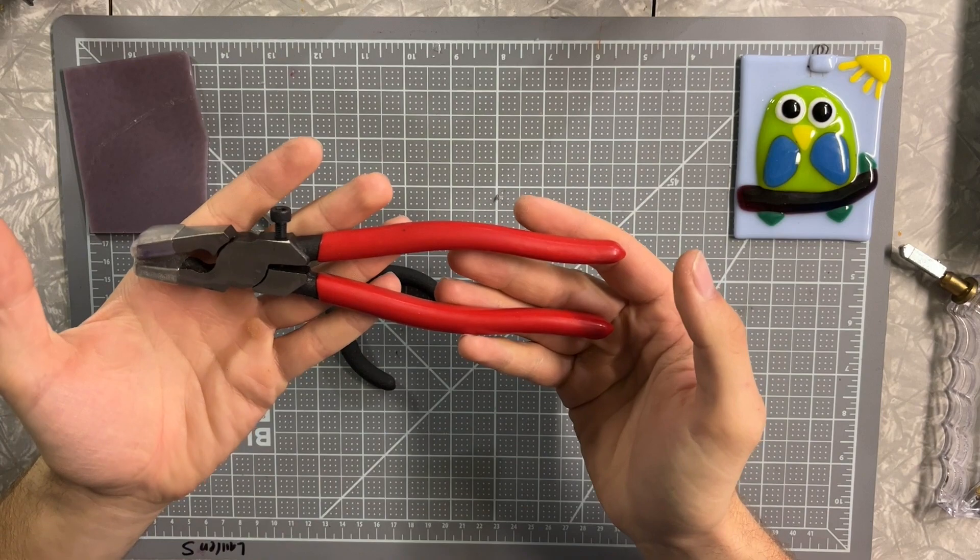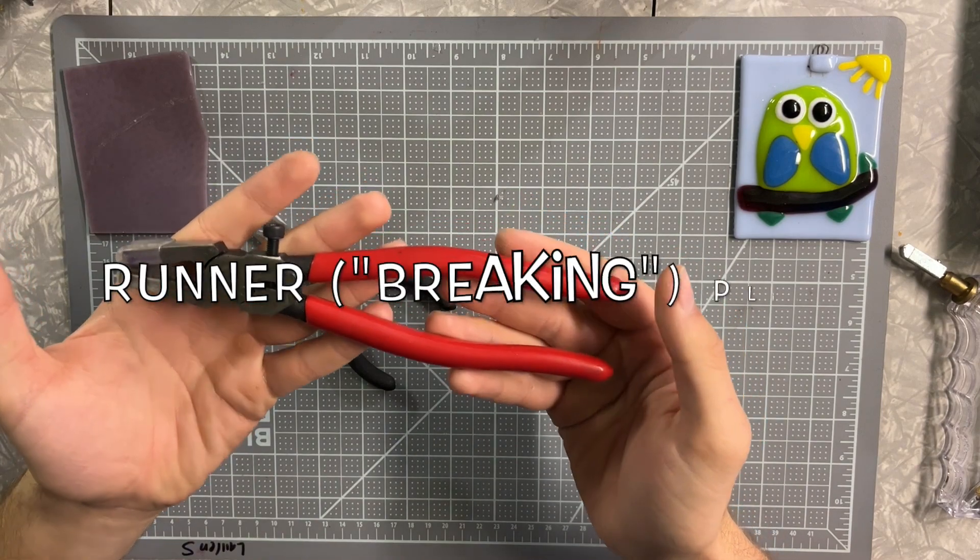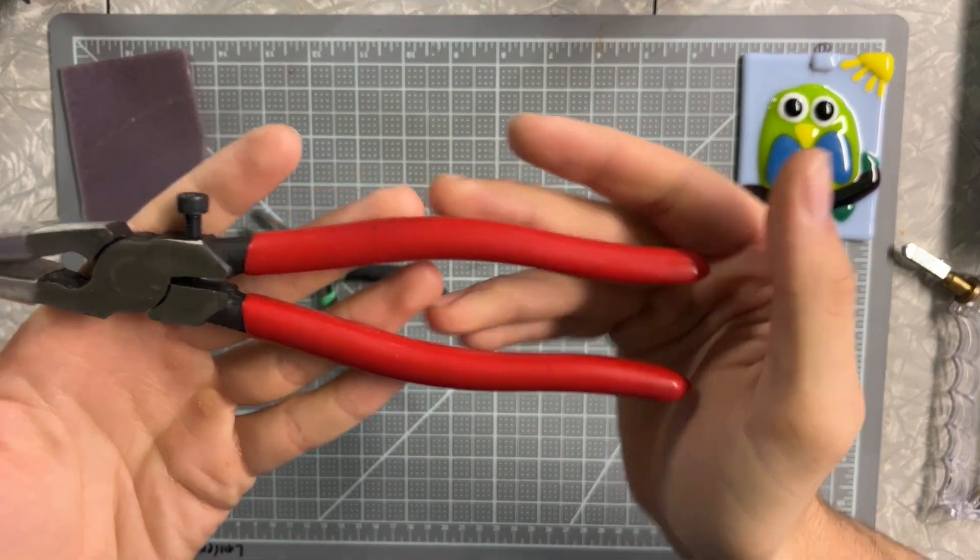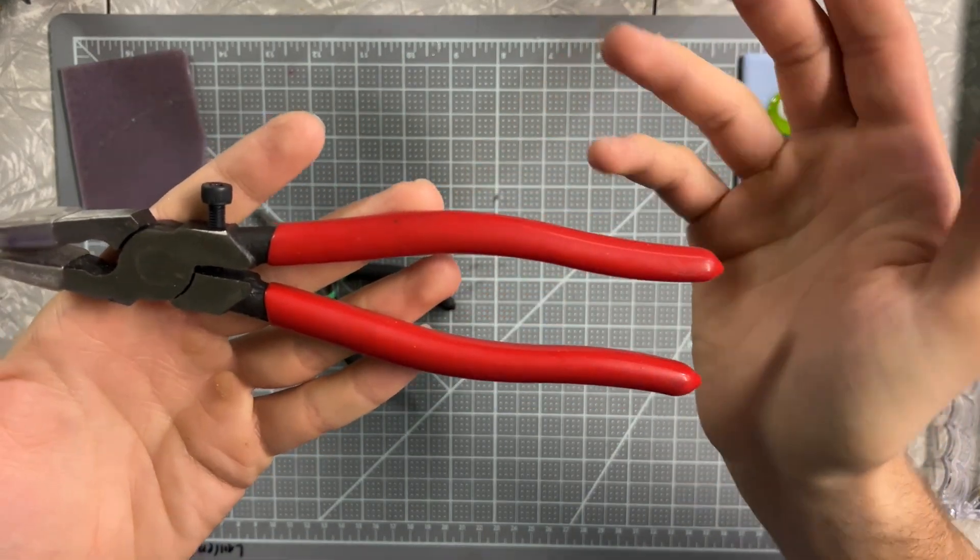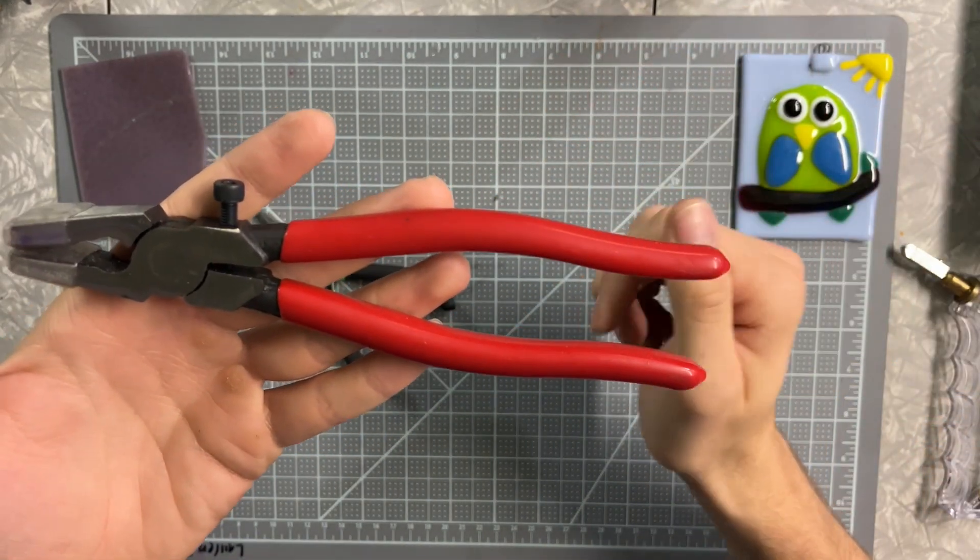Now these larger pliers here with the red handles are called running pliers. That's the technical term, but a lot of people refer to them as breaking pliers, and that's because they're used to actually break glass.